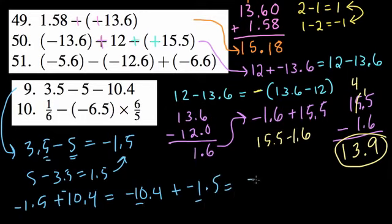10 and 1 is negative 11. Right? Negative 0.4, negative 0.5 is negative 0.9. Right? And there's our answer. Negative 11.9.